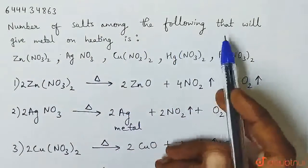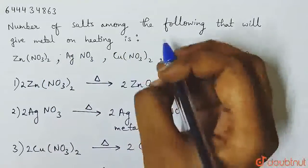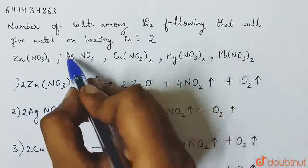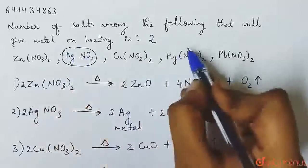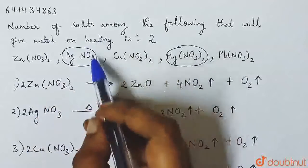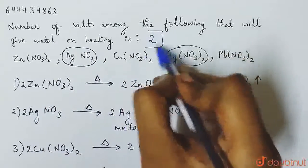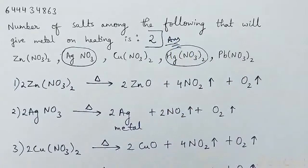Here, number of salts that will give metal on heating is 2. We have our answer 2 because silver nitrate and mercury nitrate heat to metal. They are 2. Our answer, thank you.